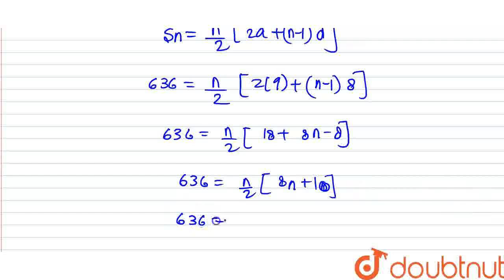Now, here we have 2, and divide. Then, we have to cancel, then multiply. 636 equals n into 4n plus 5.